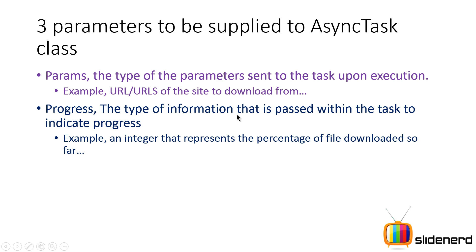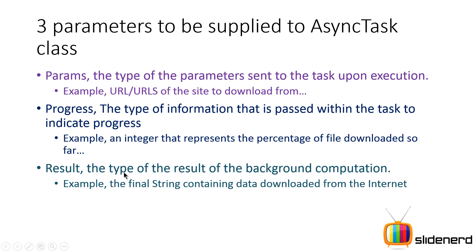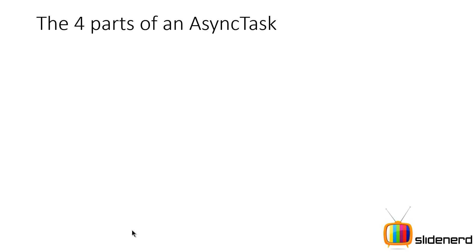The second parameter is Progress — the type of information used within the task to indicate progress. For example, if you want to update a progress bar, you'd use Integer here. The third parameter is Result — the type of result generated from your background work. For example, if you downloaded a file, the file's output, URL, or text would be the result.